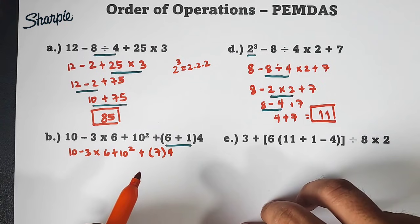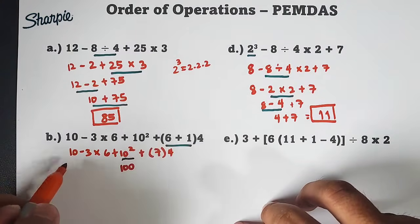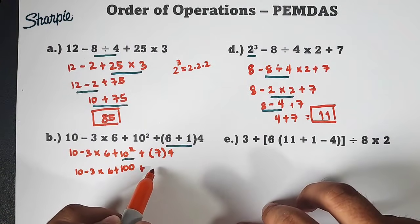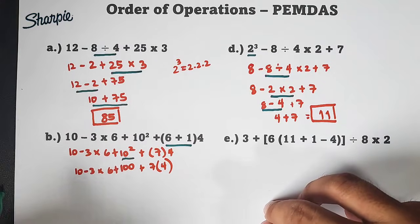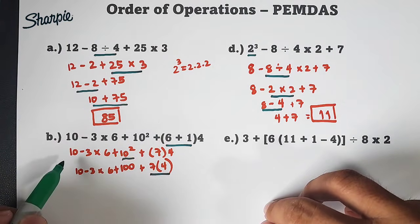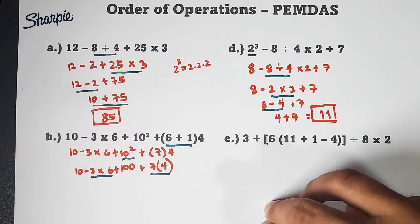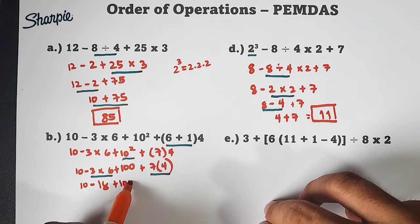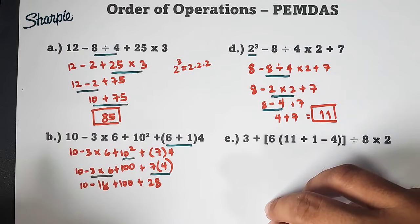Next is this exponent. We have 10 squared which is equal to 100. So copy this: 10 minus 3 times 6 plus 100 plus 7 times 4. I'm showing you the step by step process so you get used to it. Next is multiplication. We can multiply this. The 7 times 4 and the 3 times 6. This becomes 10 minus, 3 times 6 is 18, so negative 18 plus 100 plus 7 times 4 is 28. Actually, you can do this straight to save time. But let's go from left to right again.